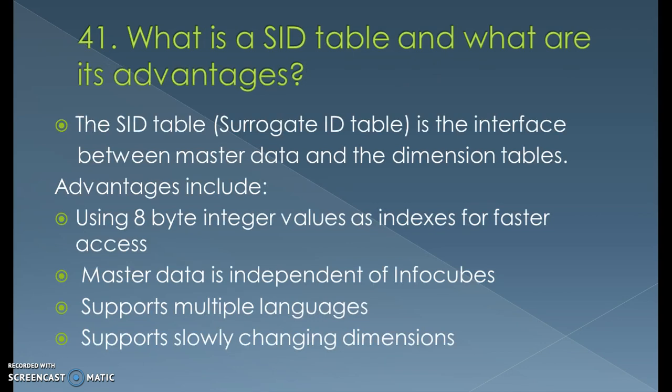What is SID and what are its advantages? The SID — surrogate ID — table is the interface between master data and the dimension tables. The advantages of SID are: using 8-byte integer values as indexes for faster access, master data is independent of infocubes, it supports multiple languages, and it supports slowly changing dimensions. The surrogate ID is basically an auto-generated number for every characteristic, specifically to map the data information with the fact table.